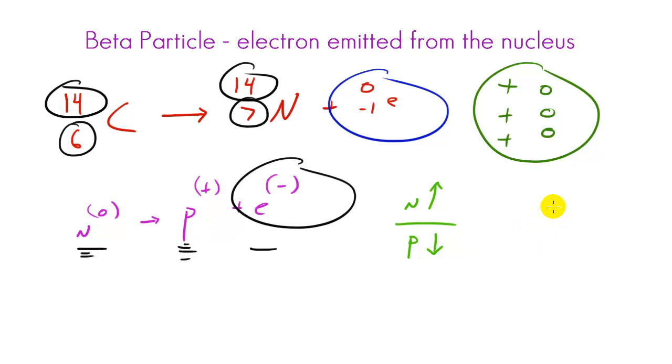So again, to recap one last time, in order to make a beta particle or beta emission, it's pretty much the process of inside the nucleus, you take a neutron and turn it into a proton and an electron. You take a neutron and turn it into a proton and an electron. The element holds onto that proton and it sheds the electron from the nucleus. So that electron is called a beta particle, and this happens in isotopes with a high number of neutrons and a low number of protons because it helps even out that ratio and it helps stabilize the atom.